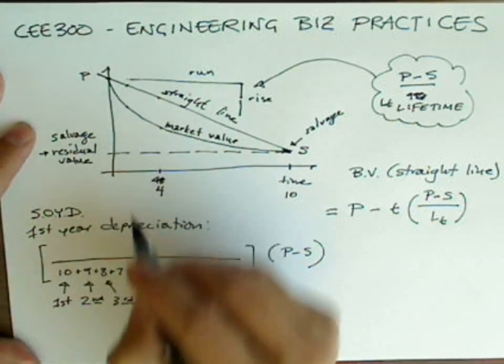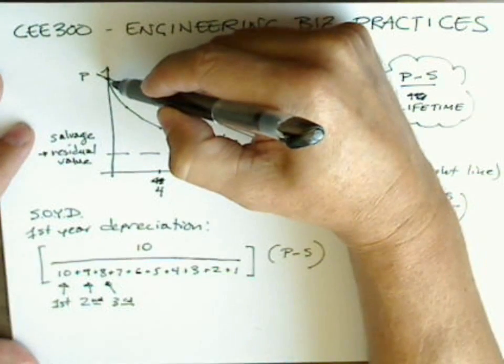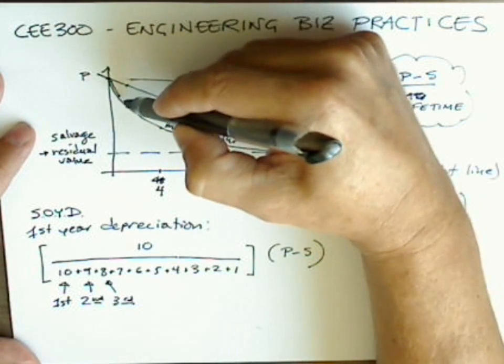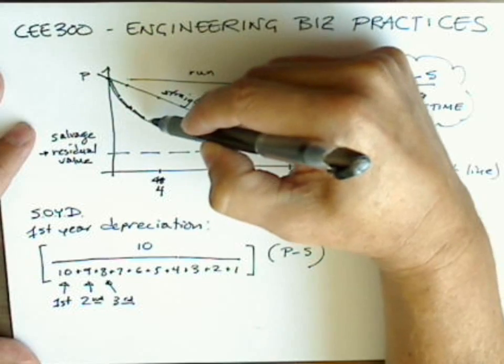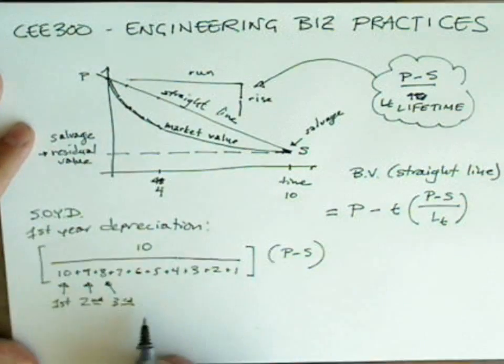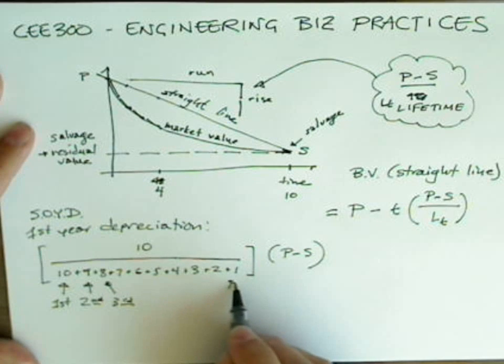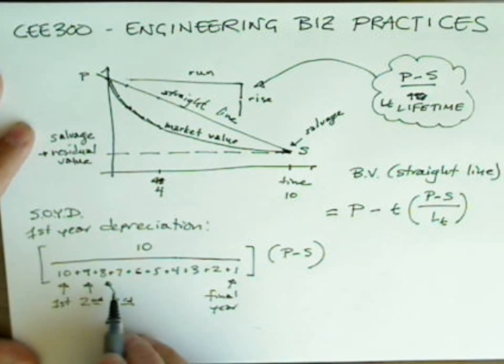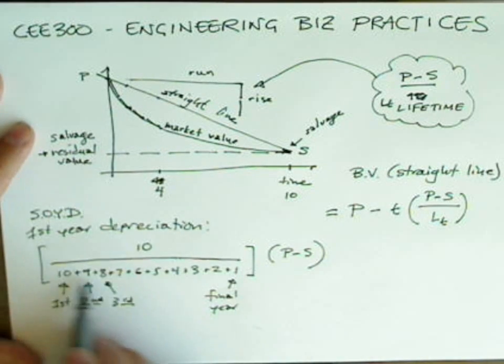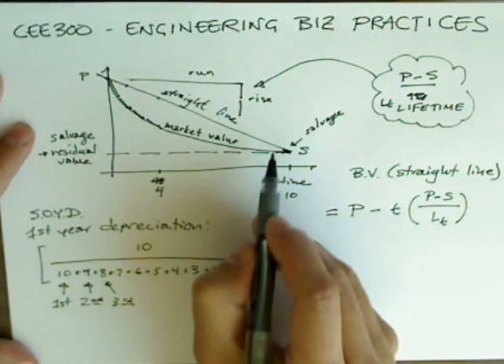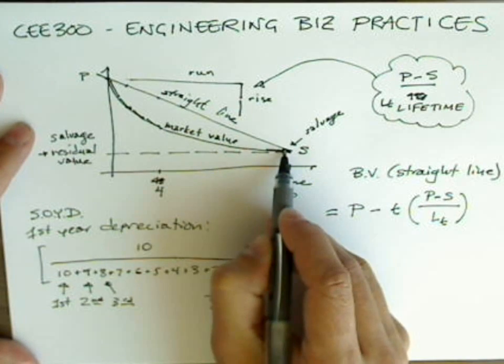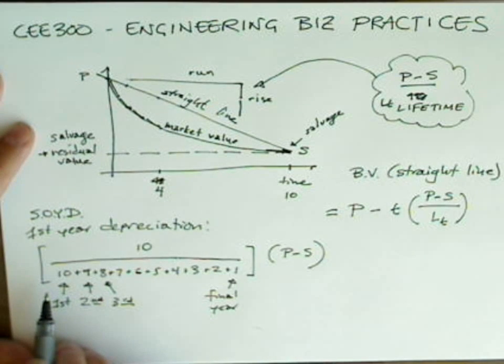The result is a closer approximation of the market value, the curve. By the last year, of course, we have, this is the final year, would be one in the numerator, all of this added up in the denominator, and the slope of that line is going to be very close to zero.